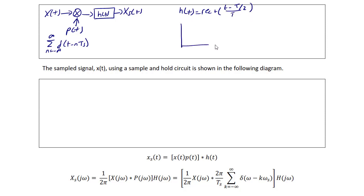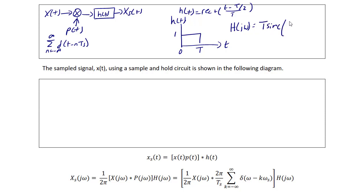H(t) looks like a shifted rect with an amplitude of 1 and a length of T. In the frequency domain, H(jω) equals T·sinc(ωT / 2π). And since it's shifted, it's multiplied by an exponential e to the negative jωT over 2.